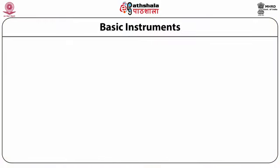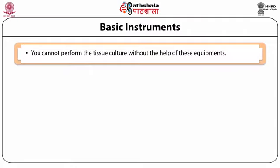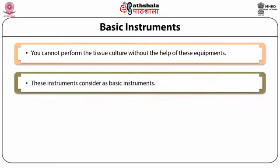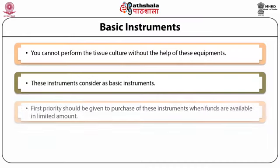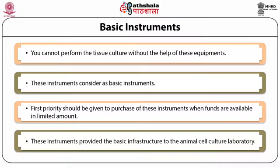Basic instruments are those without which you cannot perform tissue culture. These instruments provide the basic facilities to your laboratory. First priority should be given to purchasing these instruments if funds are available in limited amounts, as they provide the basic infrastructure to the animal cell culture laboratory.